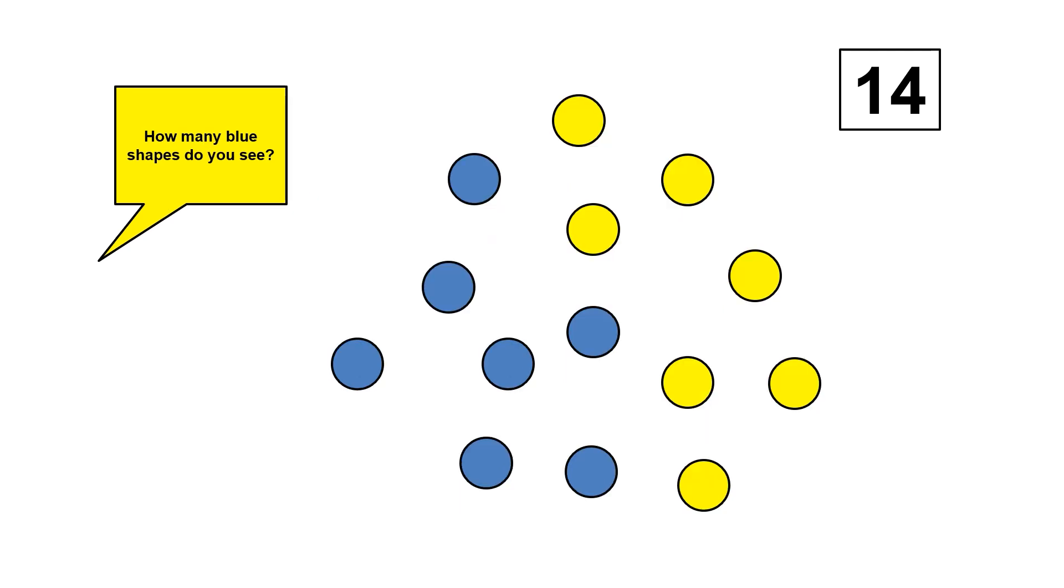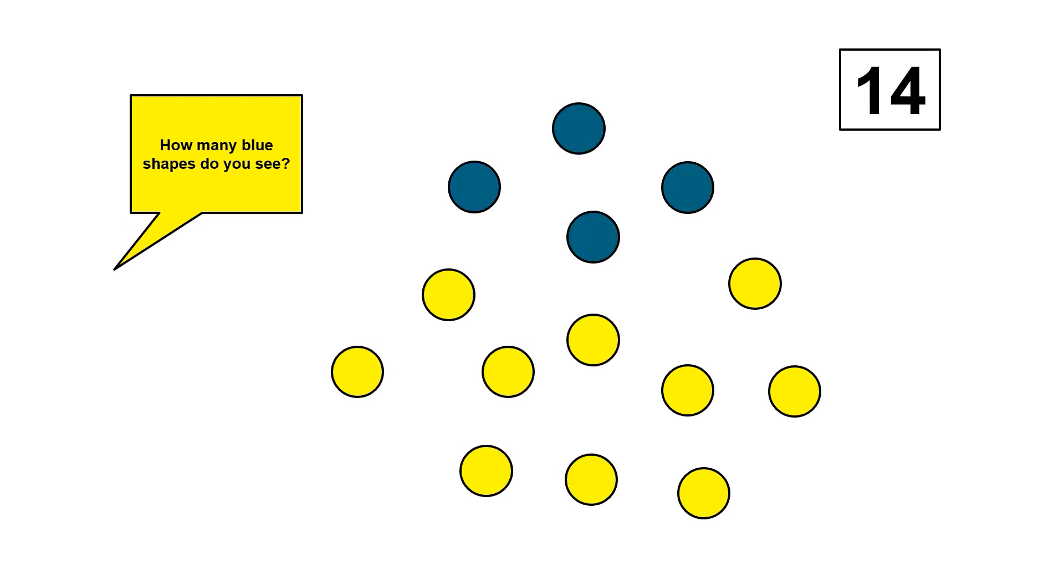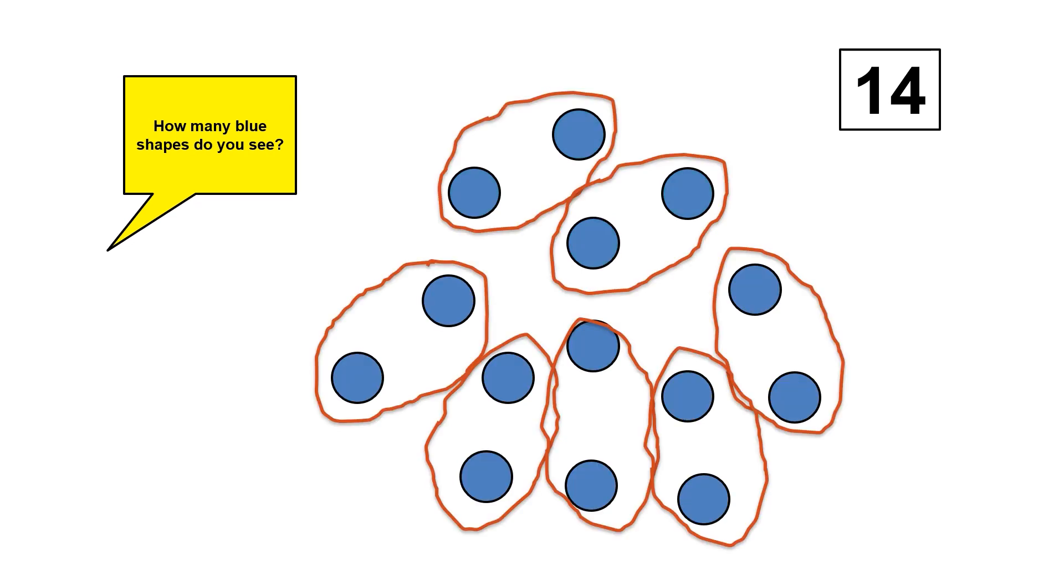Did you see the shapes in different groups, like seven shapes and seven shapes? Or 10 shapes and four shapes? Or did you see the shapes in groups of two and skip count? Two, four, six, eight, 10, 12, 14.